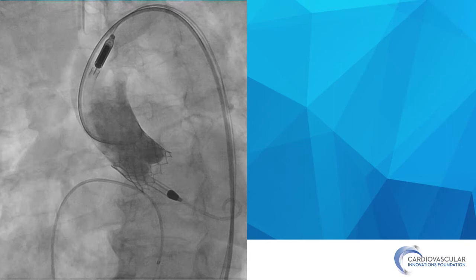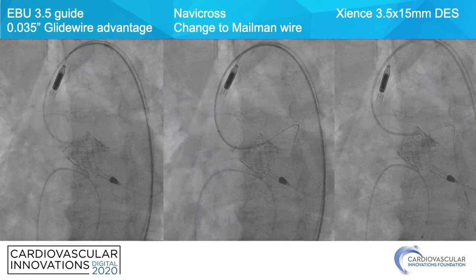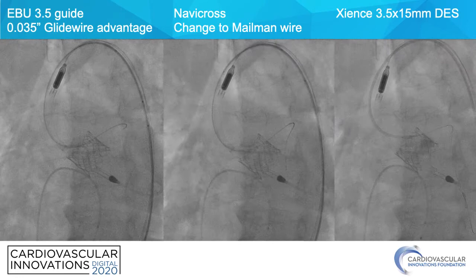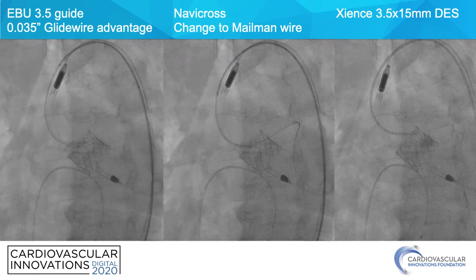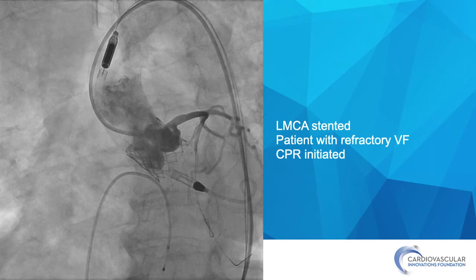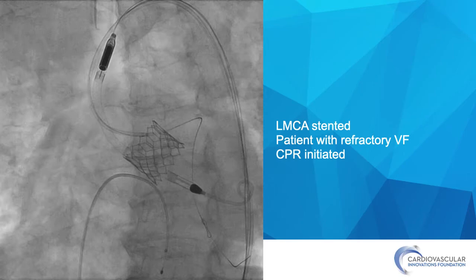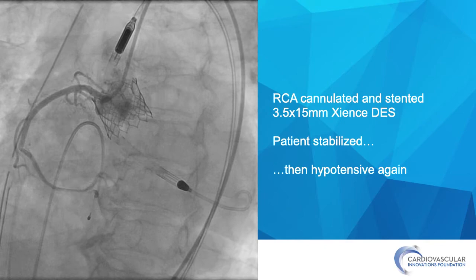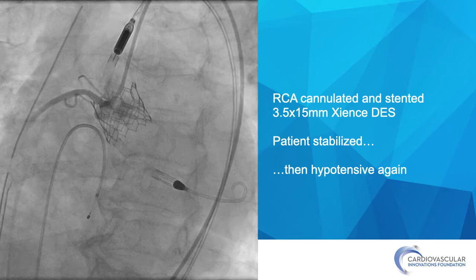An Impella-CP was placed quickly, and then we set about wiring the left coronary artery using an EBU-3.5 guide. I approached with an 0.035 Glidewire Advantage to navigate through whatever was obstructing the coronaries — whether leaflets or the valve frame itself. I then used a Navicross catheter to change to a Mailman wire and placed a Zions 3.5 by 15 drug-eluting stent at the origin of the left main coronary artery. In between bouts of CPR, the right coronary artery was cannulated using a JR-4 guide and stented with a 3.5 by 15 Zions drug-eluting stent at the ostium.